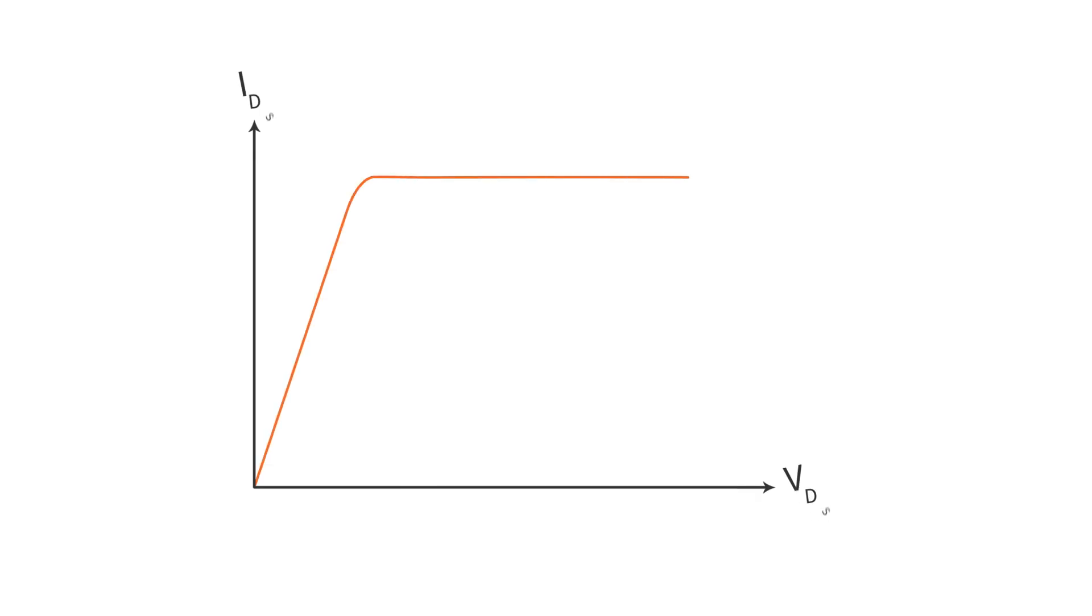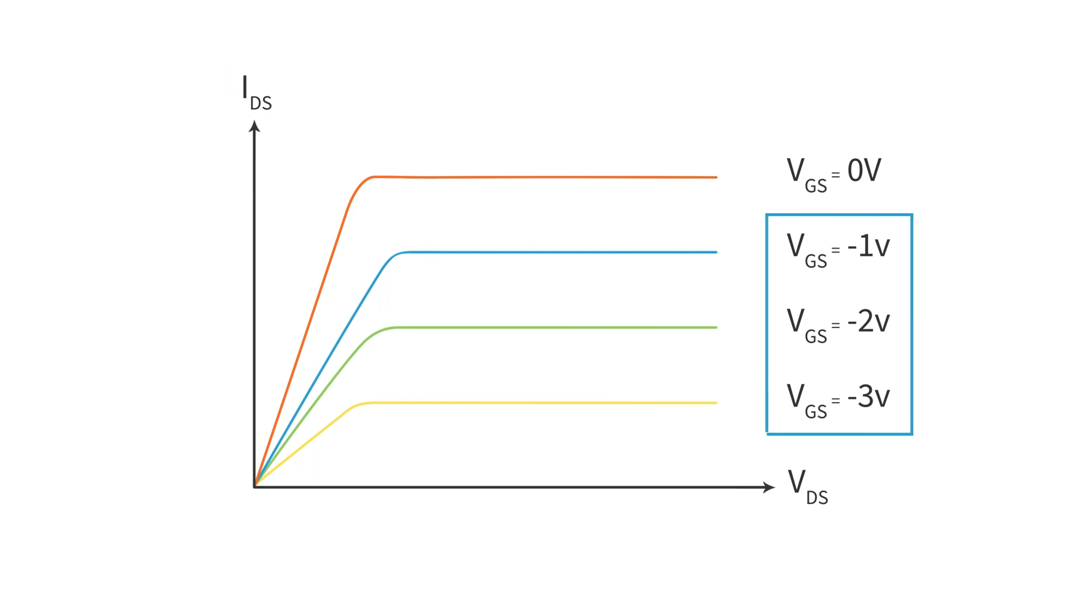However, as we include the gate voltages on our graph, we can see that applying negative voltages at the gate, we can shift everything down so that it doesn't conduct nearly as much current. This is a confusing point for many people, so take a moment to make sure that you're identifying the drain to source voltage on the x-axis, drain to source current on the y-axis, and that a negative gate to source voltage changes where the lines are.